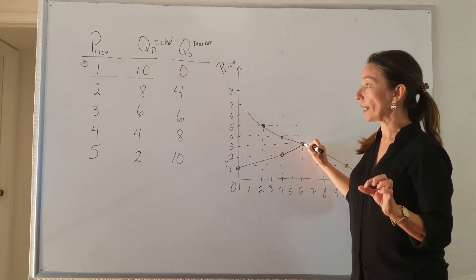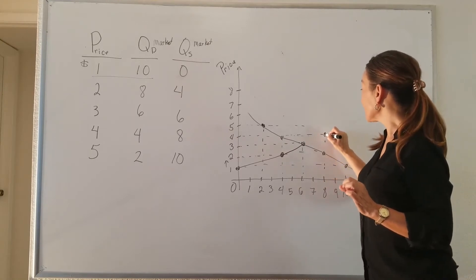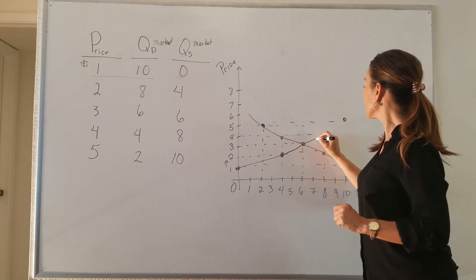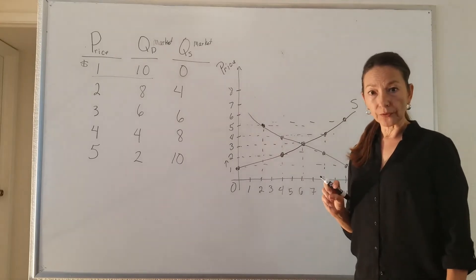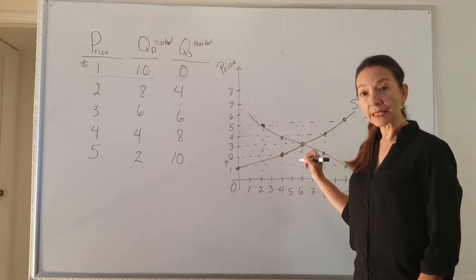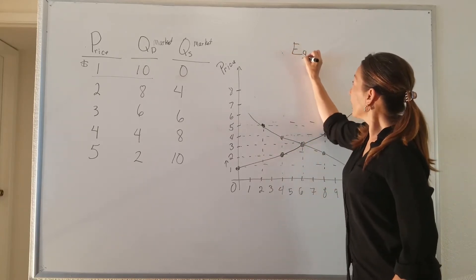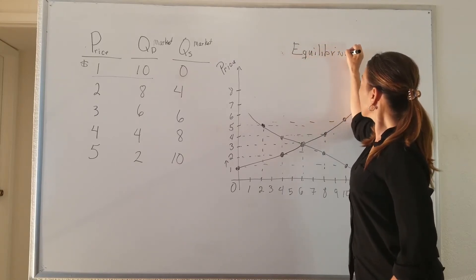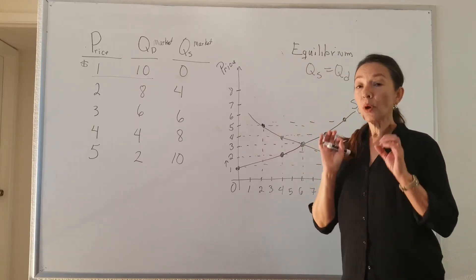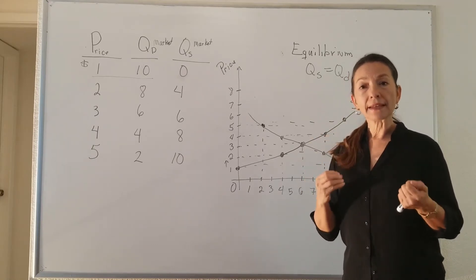So that means this is our equilibrium point. Continuing with the supply curve: at $4, eight ice cream cones are supplied, and at $5, ten ice cream cones. The point where quantity supplied and quantity demanded intersect is our equilibrium. This is where your quantity supplied equals your quantity demanded. The importance of this point is that now we know how many ice cream cones would be put into the market and at what price.